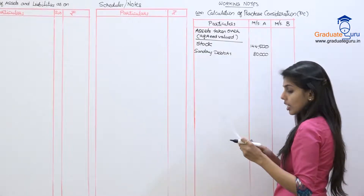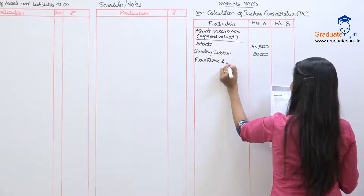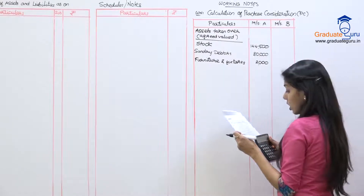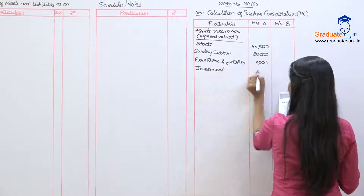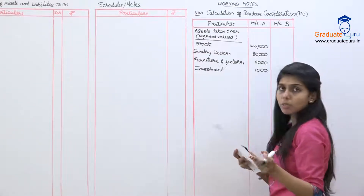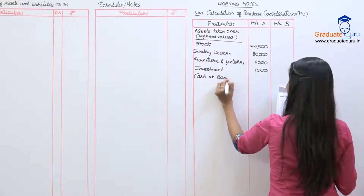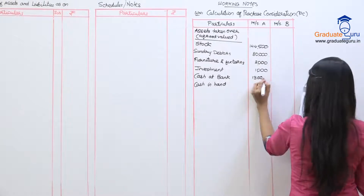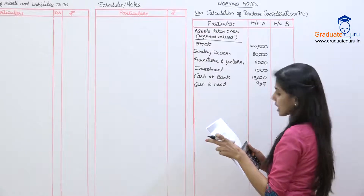Next, furniture and fixtures is to be valued at 2,000. Investment is to be taken at market value of 1,000. Besides stock and debtors, cash at bank and cash in hand have no agreed value since cash is cash, so they are taken as-is. A's cash at bank is 13,000 and cash in hand is 987. So stock, debtors, cash at bank, furniture, and investment — all assets are taken over.